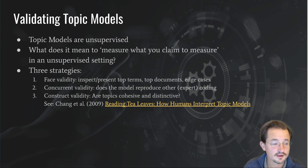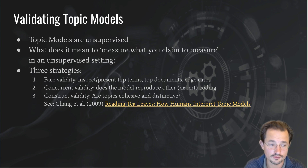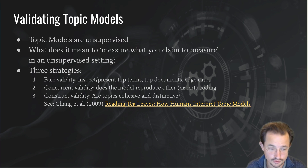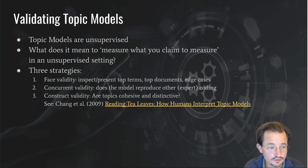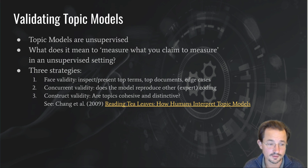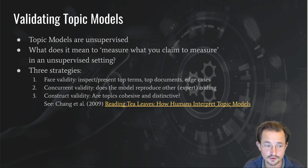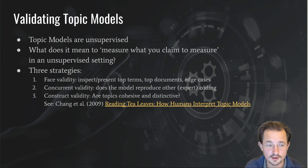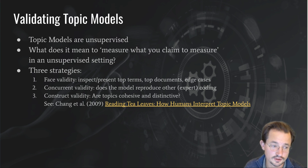The second strategy of validation is to use the same approach as for a dictionary analysis and go for concurrent validity. If you have something that you know or assume to be correct — which often means expert coding — you want to see whether your topic model, or some of its topics, reproduce those results. So if you are looking for economic news and one of your topics is economic news, you can see whether documents that score highly on that topic are also documents coded as economy by the experts.